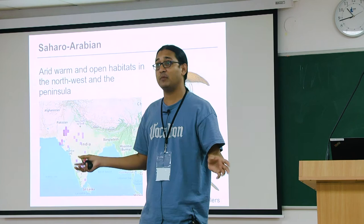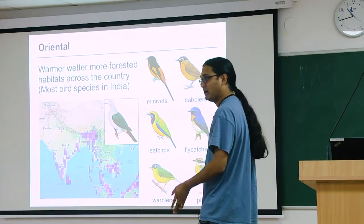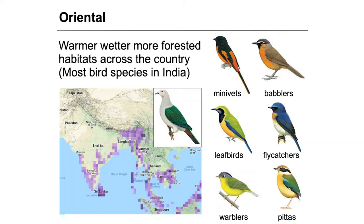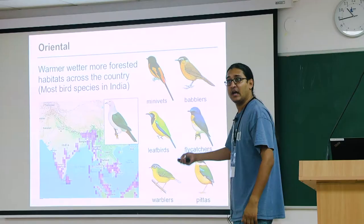You have the Saharo-Arabian coming from the West, the Palearctic coming from the North, but most of our birds are Oriental — coming from Southeast Asia and South China. Oriental birds like warm, wet, forested habitats. So minivets, babblers, leafbirds, flycatchers, warblers, pittas, and the Green Imperial Pigeon — if you look at its range, it likes the warmer, wetter parts of the country. A large proportion of India's species are Oriental, coming from Southern China and Southeast Asia.